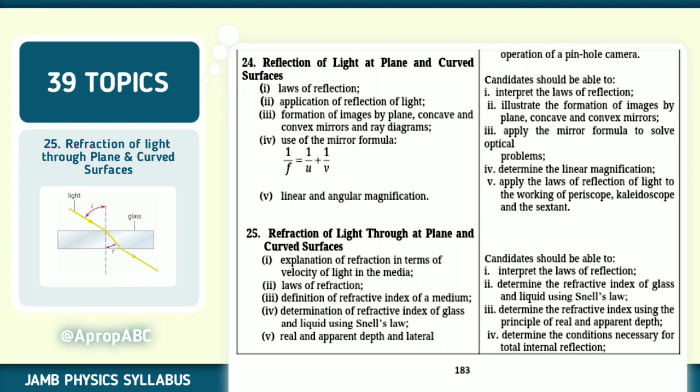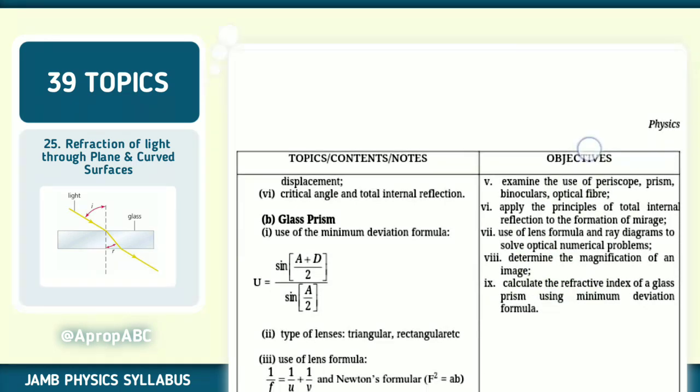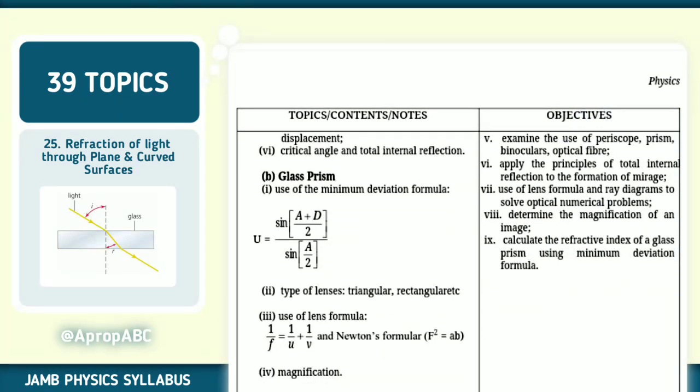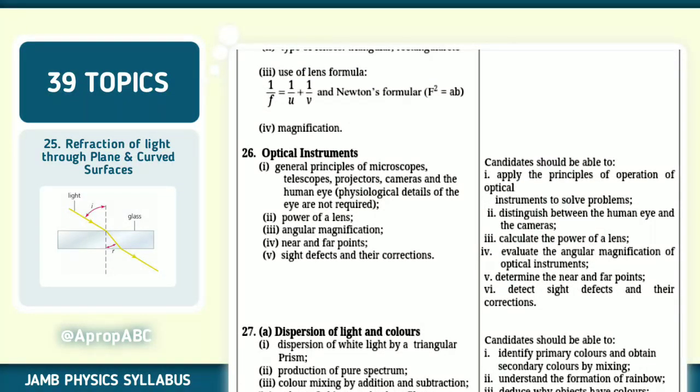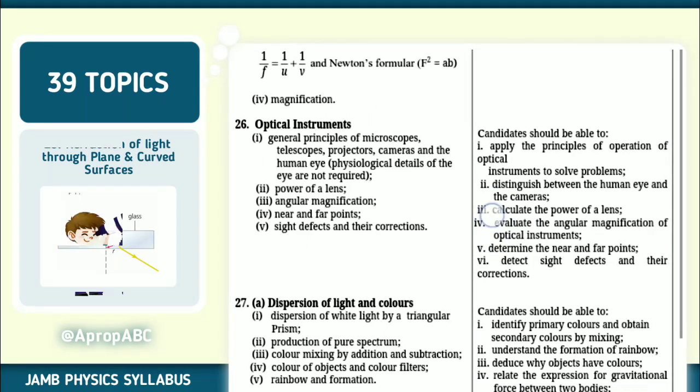Number 25, we have refraction of light through at plane and curved surfaces. Check the explanation. Know what we mean by real and apparent depth and lateral displacement. Also check out glass prisms. Check the types of lenses - triangular and rectangular. Use of lens formula. Magnification as well. Note that as well.